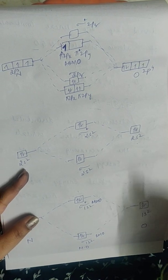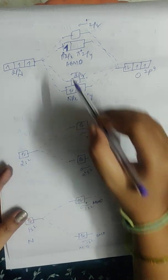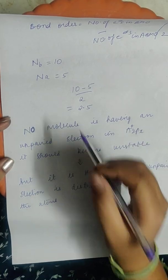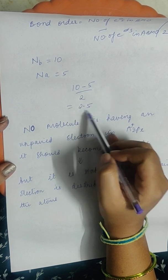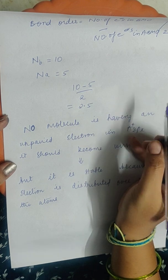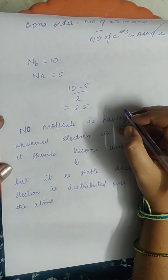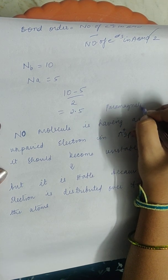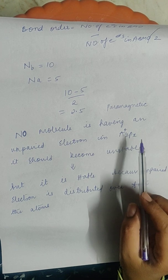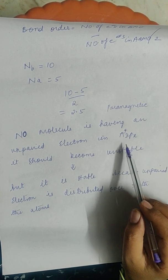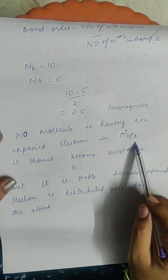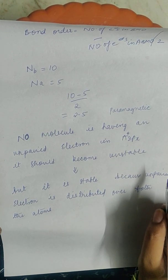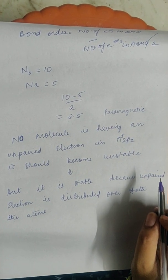For antibonding, counting sigma star 1s2, sigma star 2s2, pi star 2px1 — that gives 5 electrons in antibonding molecular orbitals. So bond order is (10 minus 5) divided by 2, which equals 2.5. Because of this bond order it is stable enough. And since it has an unpaired electron in the antibonding molecular orbital, it is paramagnetic in nature. Although the unpaired electron in pi star 2px1 might suggest instability, the molecule is stable because that electron is distributed over both nitrogen and oxygen atoms.